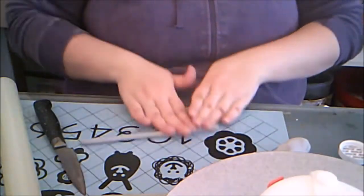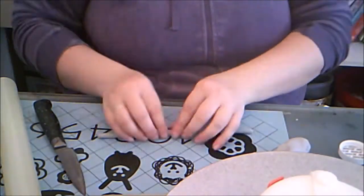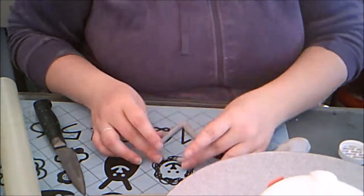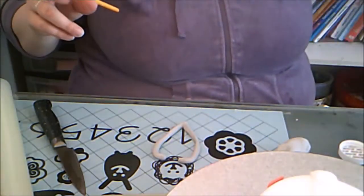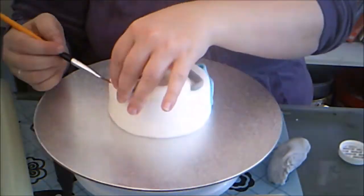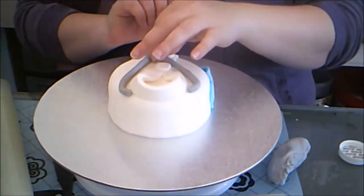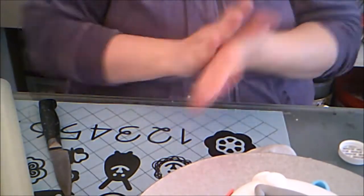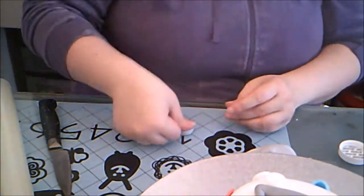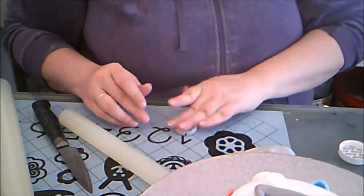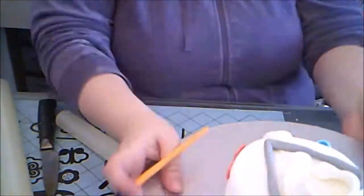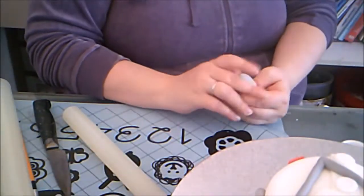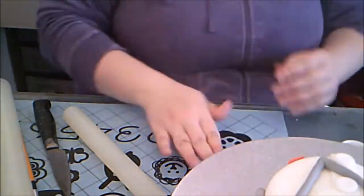Then I rolled some grey fondant into a thick snake, and shaped it into what I can only describe as a stethoscope shape. I placed it around the collar of the lab coat. Then I pressed a round piece of grey fondant into a thick disc, and pressed it onto the side of the cake. Finally, I rolled a thick snake to connect the two pieces of the stethoscope.